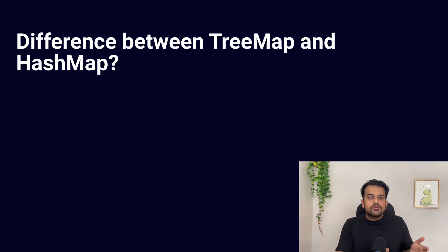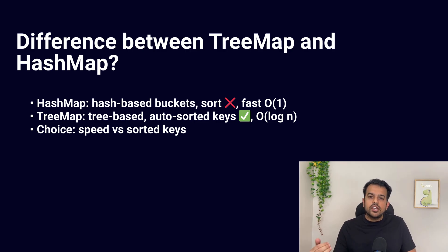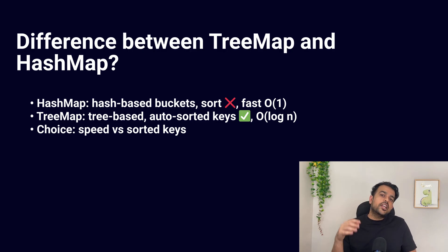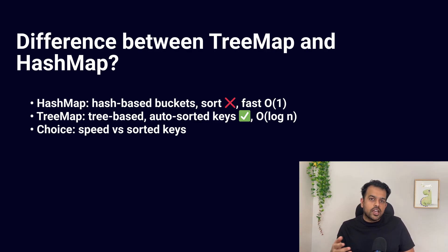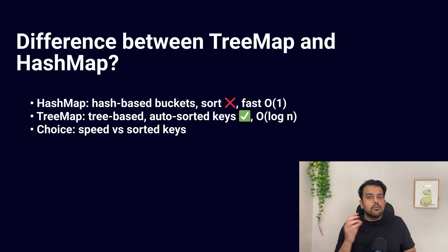The next question: what is the difference between TreeMap and HashMap? HashMap stores key-value pairs in buckets inside an array, uses hash code to find the bucket index, gives O(1) time complexity for put() and get(), but does not sort keys. TreeMap also stores key-value pairs but internally uses a red-black tree and uses comparison logic to place keys — it does not use hashing. That is why TreeMap sorts keys automatically, with a time complexity of O(log n). Use HashMap when you need fast lookup and don't care about sorting; use TreeMap when you want sorted keys.